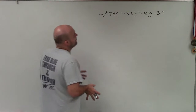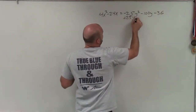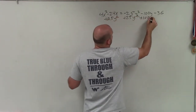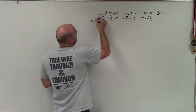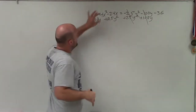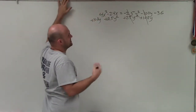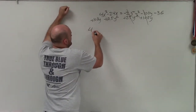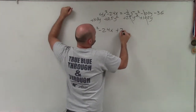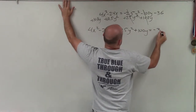Before we complete the square, we want to get our x's and y's on the same side. To do that, I need to add 25y squared to both sides and add 100y to both sides. I'm going to leave the negative 36 on the right side and rewrite this with the y squareds and x squareds in descending order. So I have: 4x squared minus 24x plus 25y squared plus 100y equals negative 36.